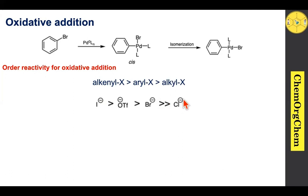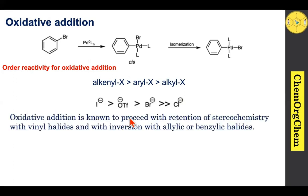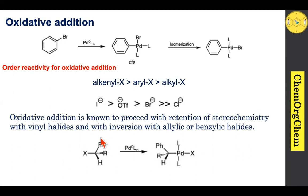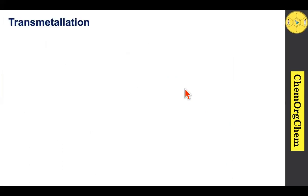For the leaving group, iodide-containing compounds undergo oxidative addition more readily compared to chlorine-containing compounds. For chlorine-containing compounds, adding an electron-rich ligand can induce oxidative addition more quickly. Oxidative addition is known to proceed with retention of stereochemistry for alkene compounds. In the case of allylic or benzylic halides, inversion of stereochemistry is observed. For example, with a benzylic halide, palladium(0) attacks the back side, producing inversion.